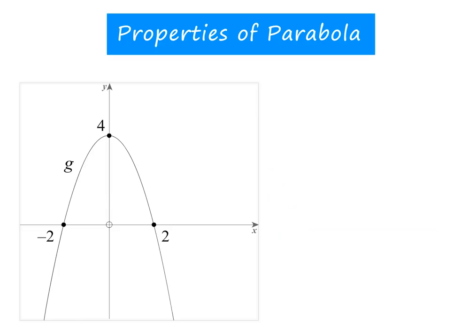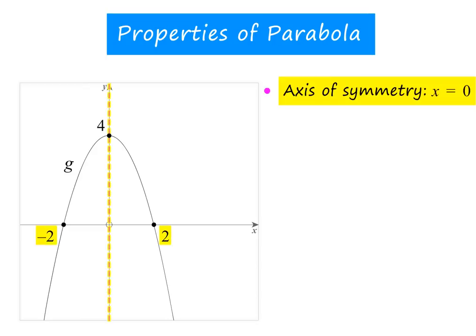Let's investigate the properties of this parabola, which I have called G. The axis of symmetry is the y-axis, which has the equation x equals 0. We know that it is the axis of symmetry because both x-intercepts are the same distance away from the y-axis.